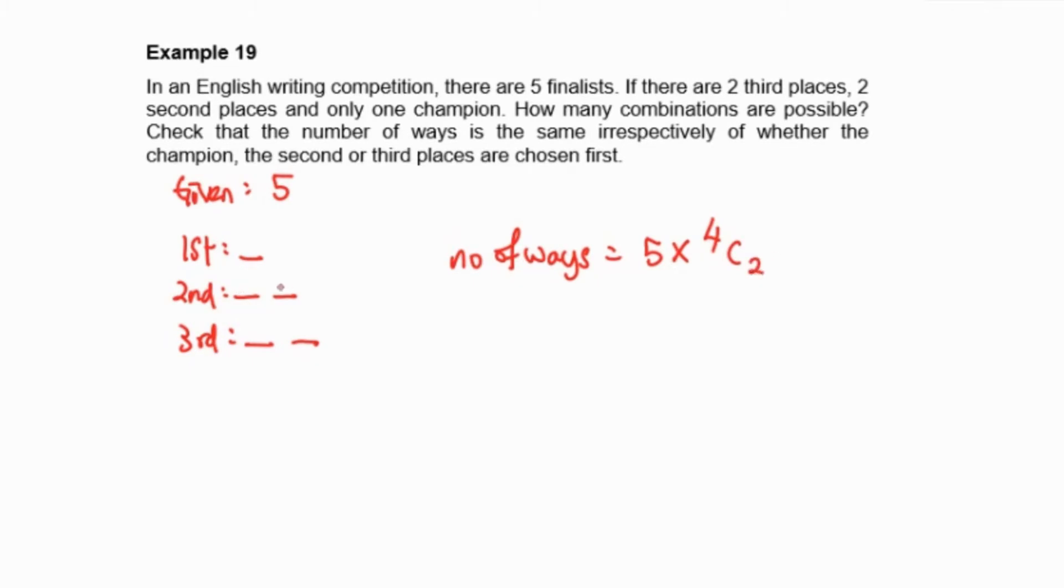But the order is not considered because second place for the first one and then second place for the second one, they are in the same category so the order is not taken into account. Then for the third place, we have five finalists, one selected for champion and then two selected for second place. Now we have two that will be selected for third place.